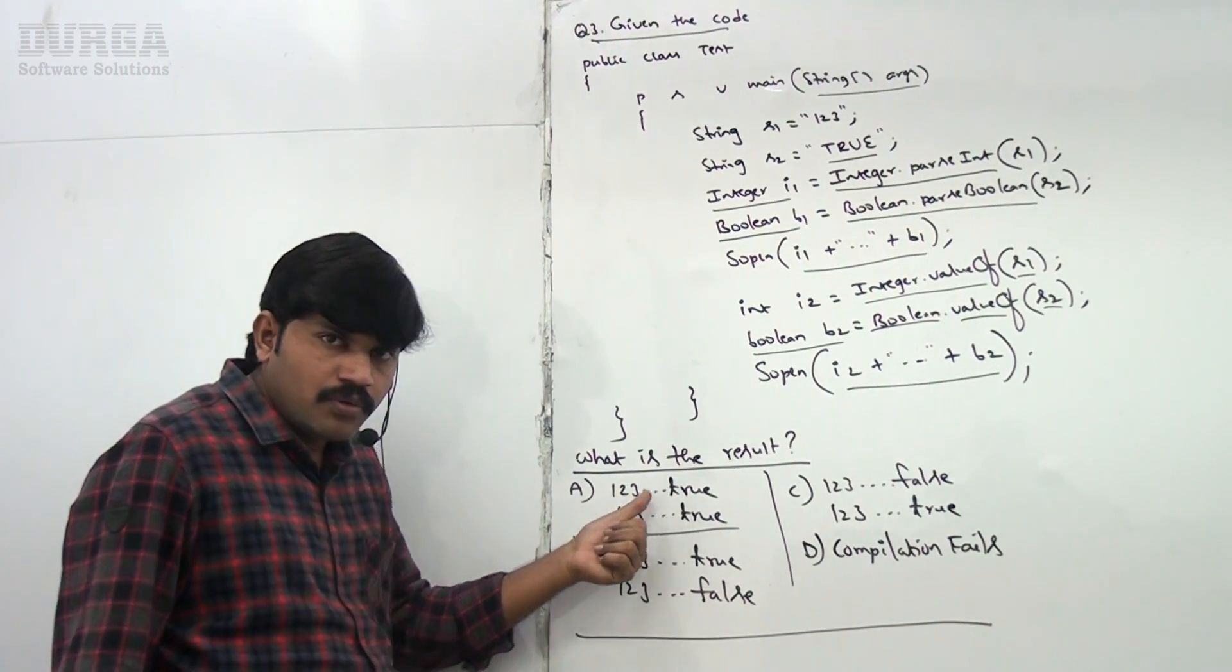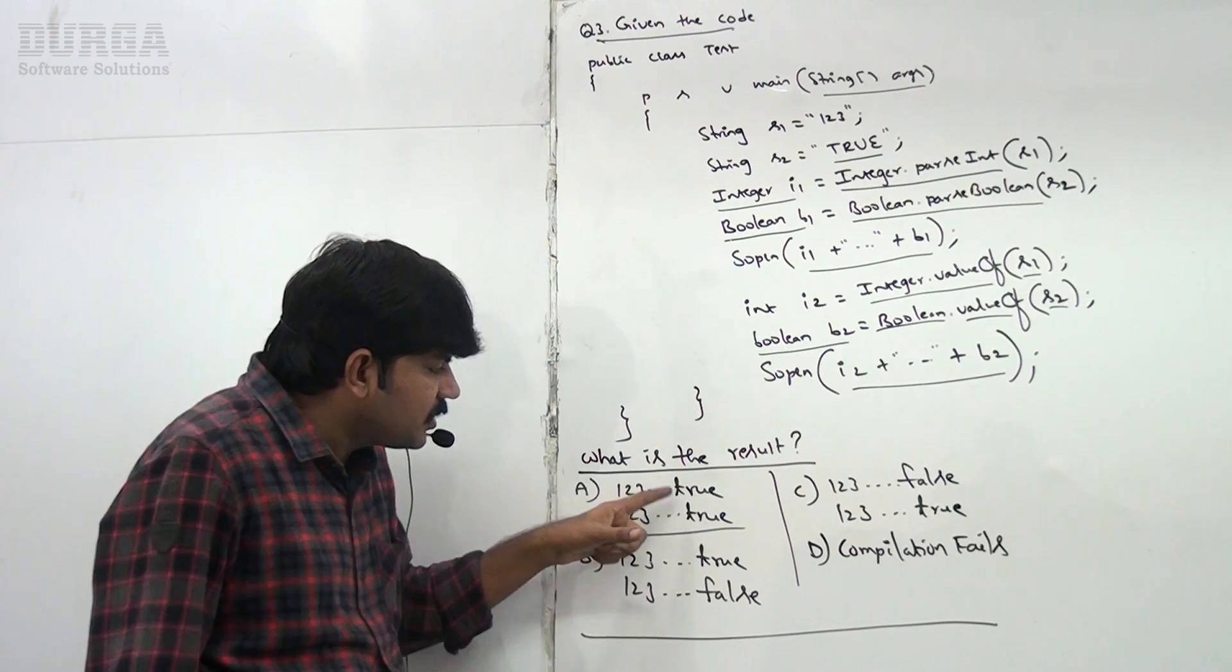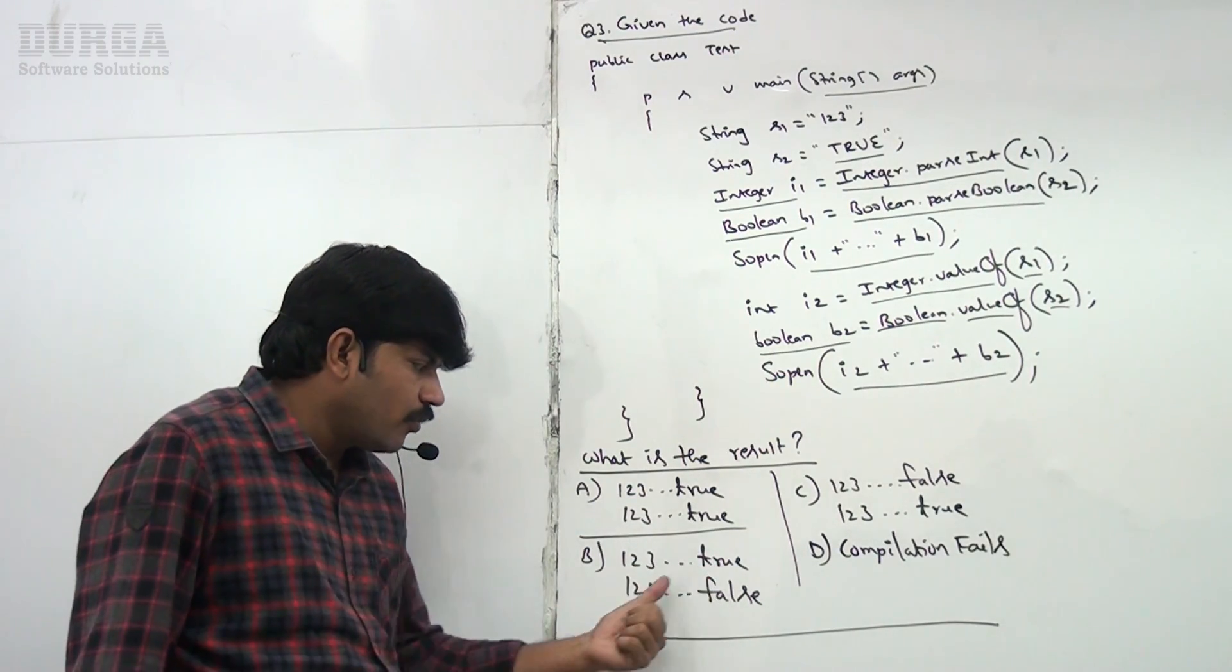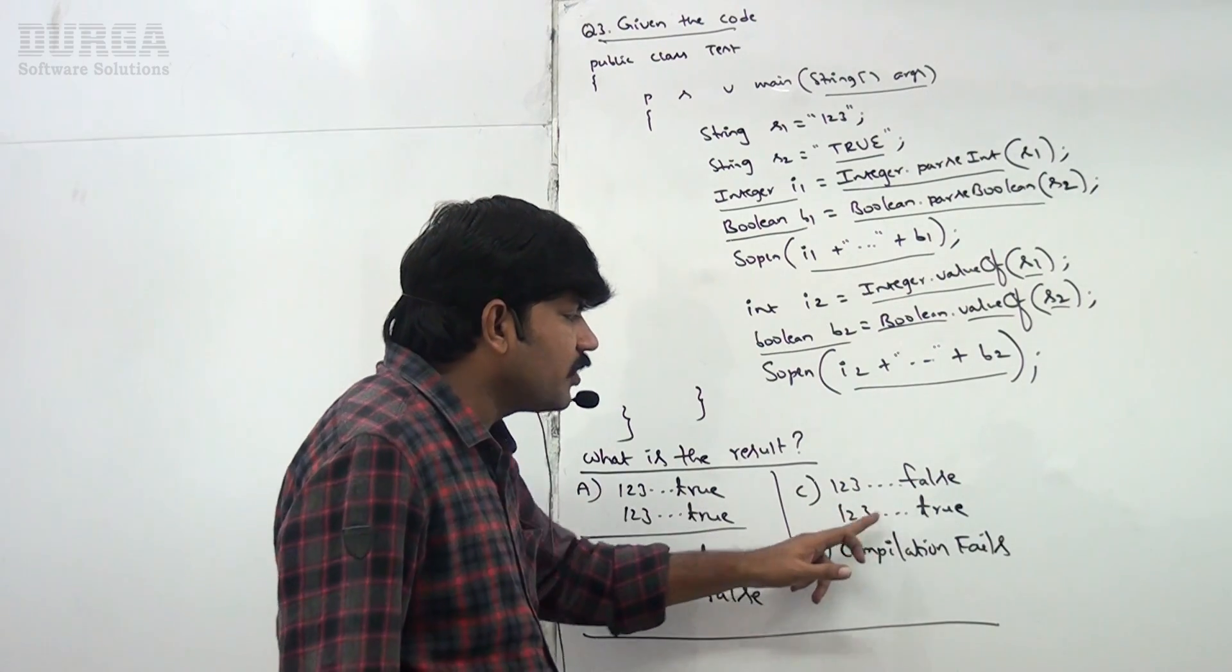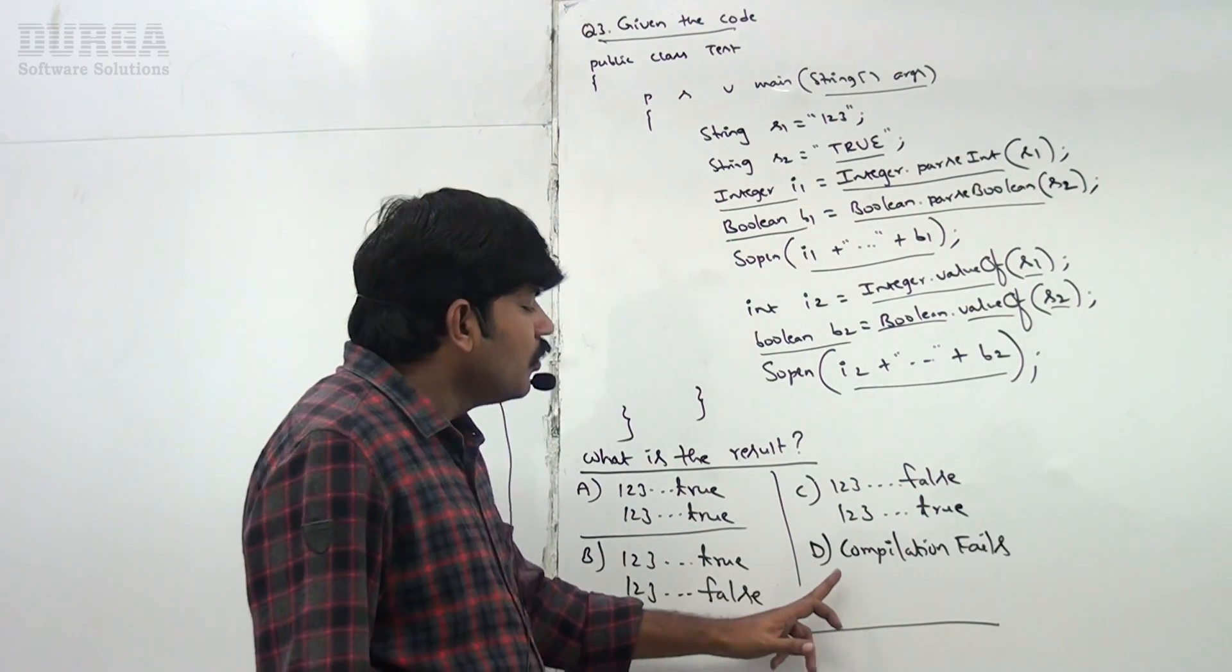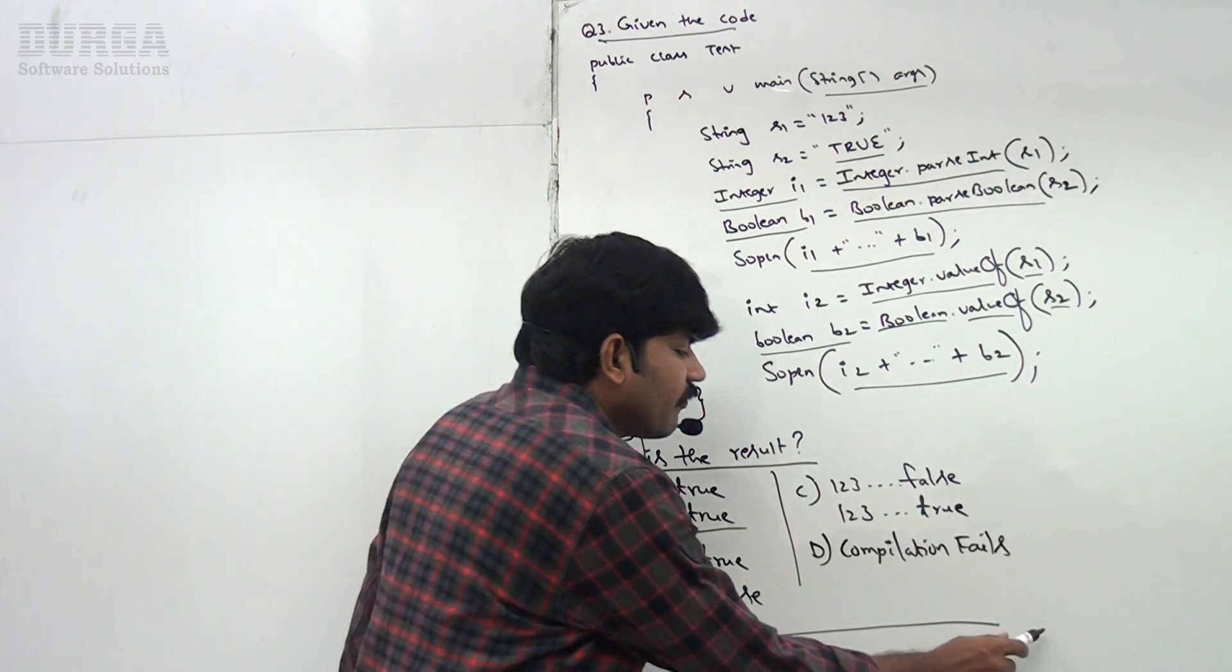123 true, 123 true - this is the first option. 123 true, 123 false is the second option. 123 false, 123 true is the third option. Fourth option is compilation fails. That's all.